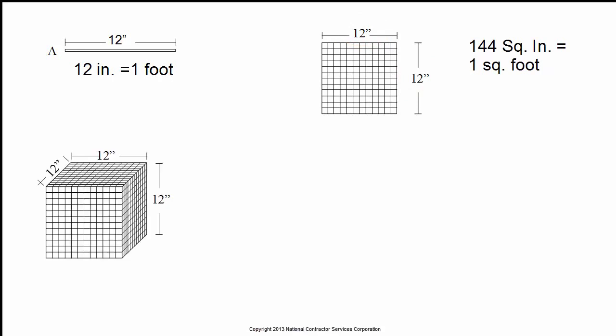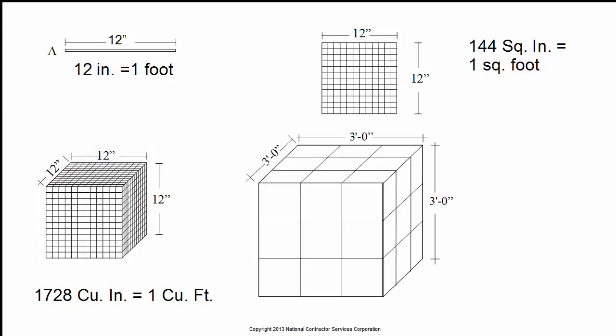Converting to cubic feet means length multiplied by the width, then multiplied by the height or the depth, containing 1,728 cubic inches. To convert to cubic yards, take the length by the width by the height divided by 27. This is simple, except when your measurements include feet and inches.